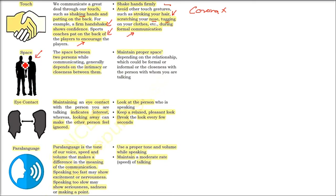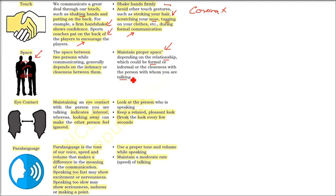Space means how close you are. If you are with a friend or family, you can get as close as you want. But with co-workers — especially females — or with your boss, try to maintain a distance. It depends on formal and informal relationships, and how close you can go. If working in an office, maintain a proper distance.